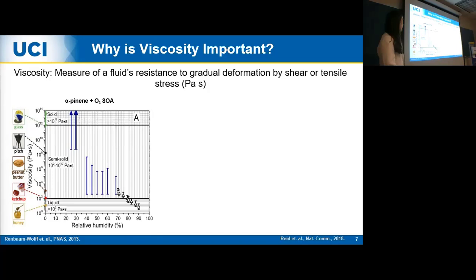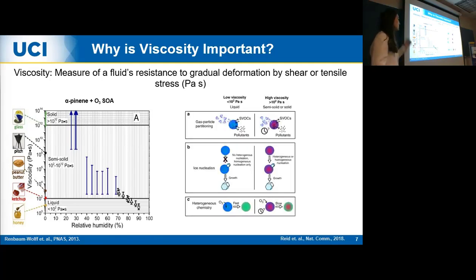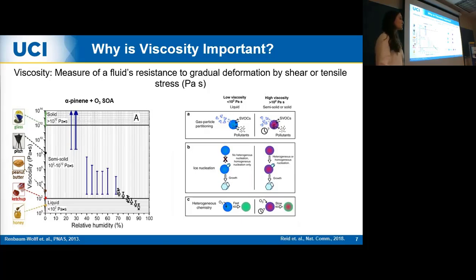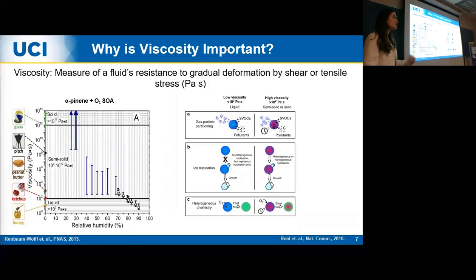As relative humidity increased to around 50–60%, viscosity dropped — more like peanut butter than tar pitch. As humidity increased further, viscosity dropped to honey-like levels. This is because water acts as a plasticizer, allowing more dynamic movement within the particle as it uptakes water. Viscosity is important because it impacts gas-to-particle partitioning time — semi-volatiles partitioning in and out of the particle slow down at high viscosity. Additionally, ice nucleation is affected: under low-viscosity SOA, only homogeneous nucleation occurs, requiring the particle to become supercooled to freeze. Under high viscosity, heterogeneous nucleation through an external seed becomes possible at warmer temperatures.